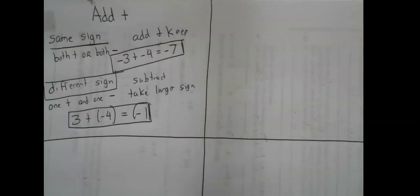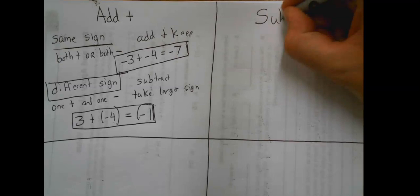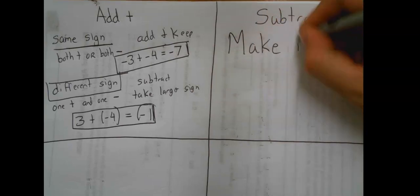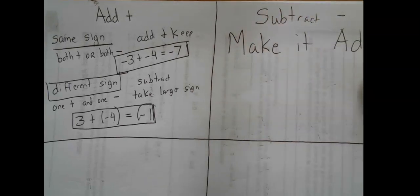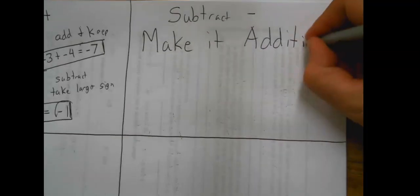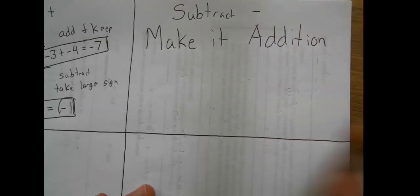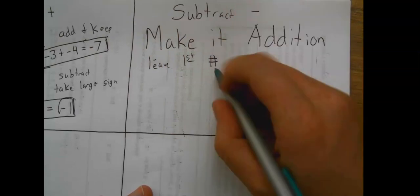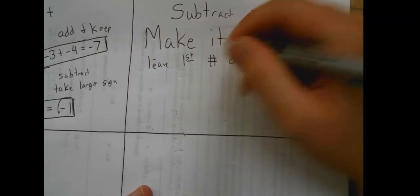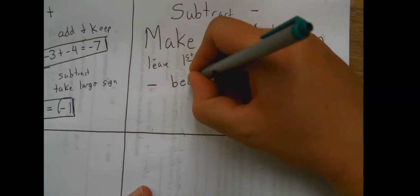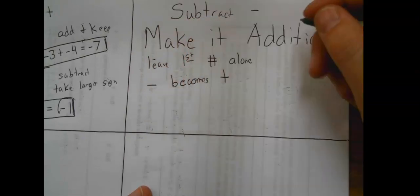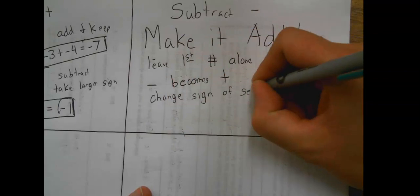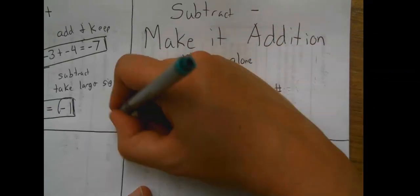Subtraction or subtraction, you must make it addition. Every subtraction problem can become an addition problem. First, you're going to leave the first number alone. Then the negative or the minus becomes a plus. And you change the sign of the second number. And then you just do the addition rules.